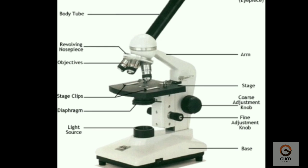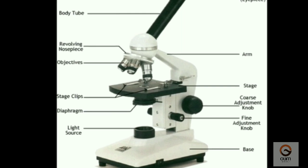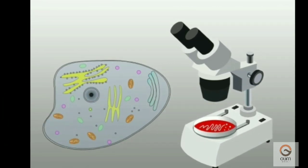Second one is the knob. The fine adjustment knob is the small knob used to change the position of the body tube by making small adjustments to the focus of your sample.